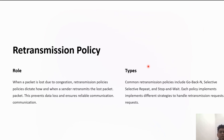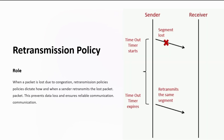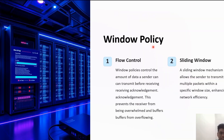Retransmission policy is one of the open loop congestion control techniques. Here the sender retransmits a packet if it feels that the packet it has sent is lost or corrupted. Retransmission in general may increase congestion in the network, but we need to implement a good retransmission policy to prevent congestion. The retransmission policy and timers need to be designed to optimize efficiency while preventing congestion.